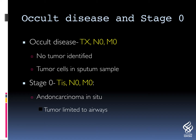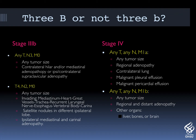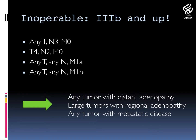Looking at the stages: occult disease or stage 0 includes cancer not identified or adenocarcinoma in situ, which is a tumor solely limited to the airways. Stages 1 through 3A are stages that can be treated with curative intent. Stage 3B or higher are stages that are usually not treated with surgery but with radiation and chemotherapy in combination. Inoperable 3B and above contain any tumor size and nodal involvement of N2 or N3 disease with potential metastatic lesions.